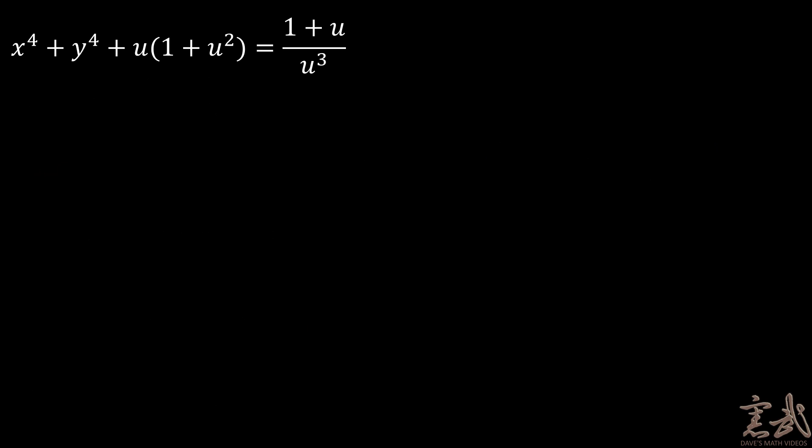At this point, we've made some considerable progress about simplifying our expression. But what can I do about the x to the fourth plus y to the fourth? After all, I want to try to get everything in terms of u.